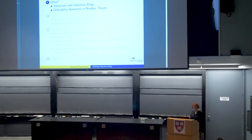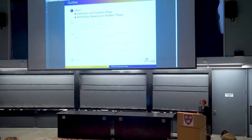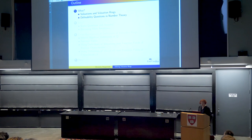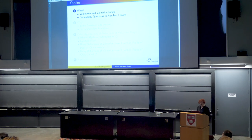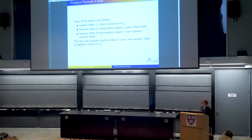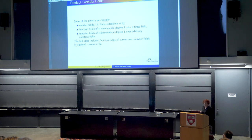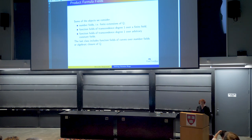Since most people here are not very familiar with my subject, I'll start directly with the problem at hand and then backtrack to tell you where it came from. I'll start with the objects I'm working with: number fields, global function fields, and more generally function fields of transcendence degree one over arbitrary constant fields. Of course, this is a bit misleading because the constant fields are arbitrary, so the total transcendence degree could be arbitrary.